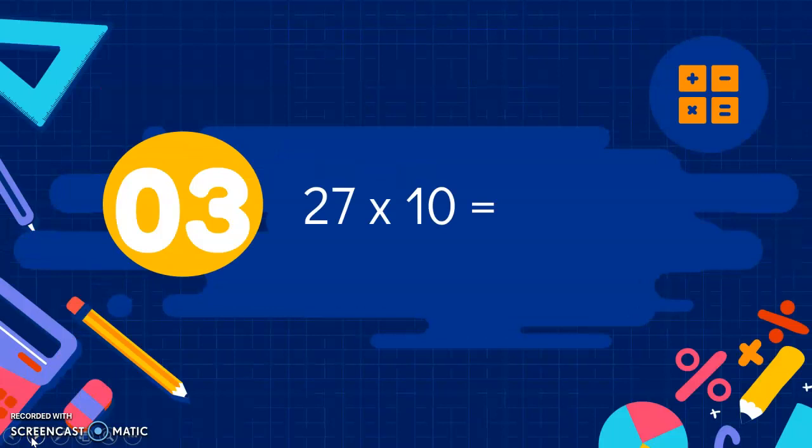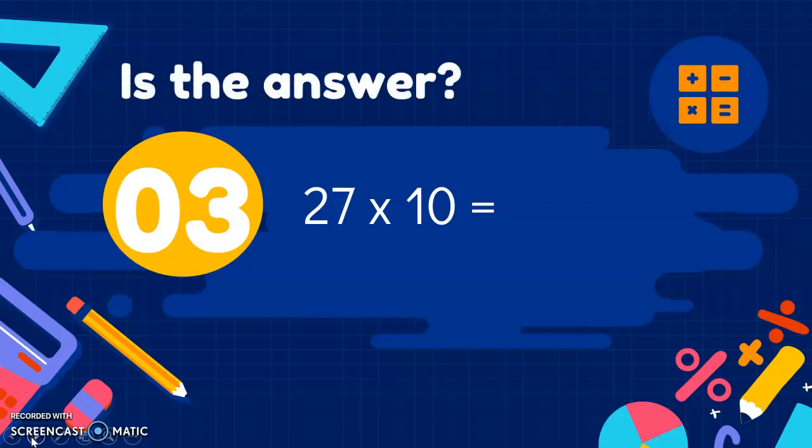Number 3. 27 times 10. When we times things by 10, we make things 10 times bigger. So is the answer 90, 270, 98 or 66? Not 90 or 98. I wonder if you get there quicker than me. It's 270. All we have to do when we make things 10 times bigger is add a 0. Everything moves along one place.